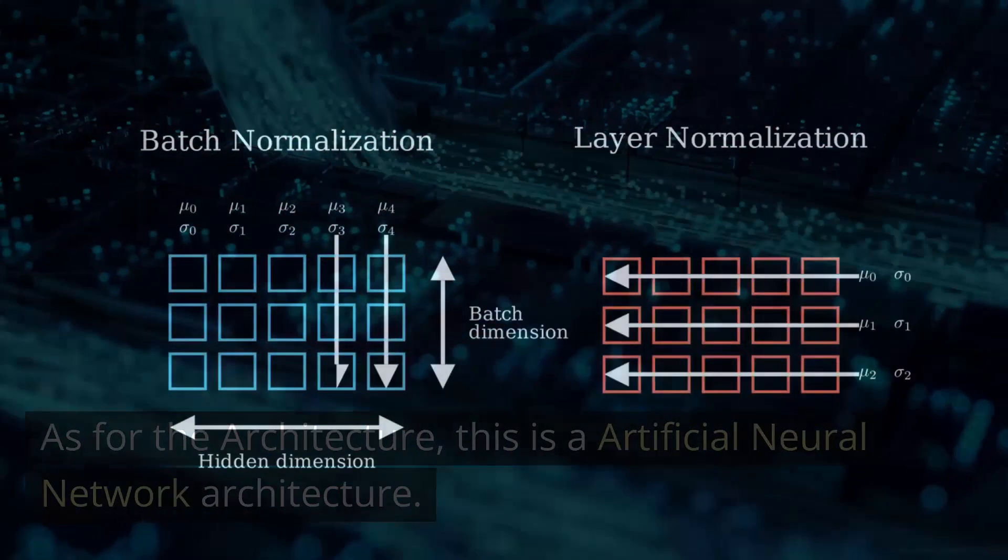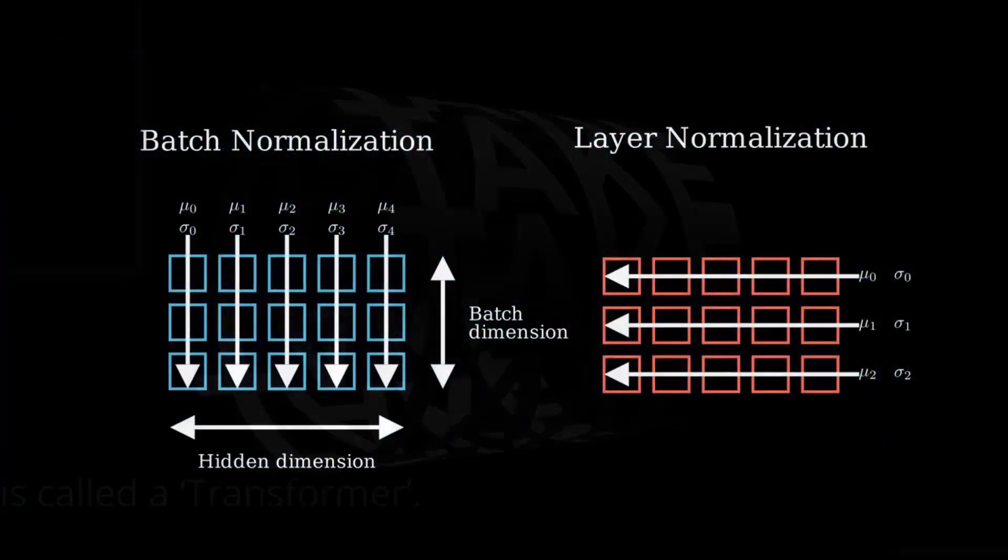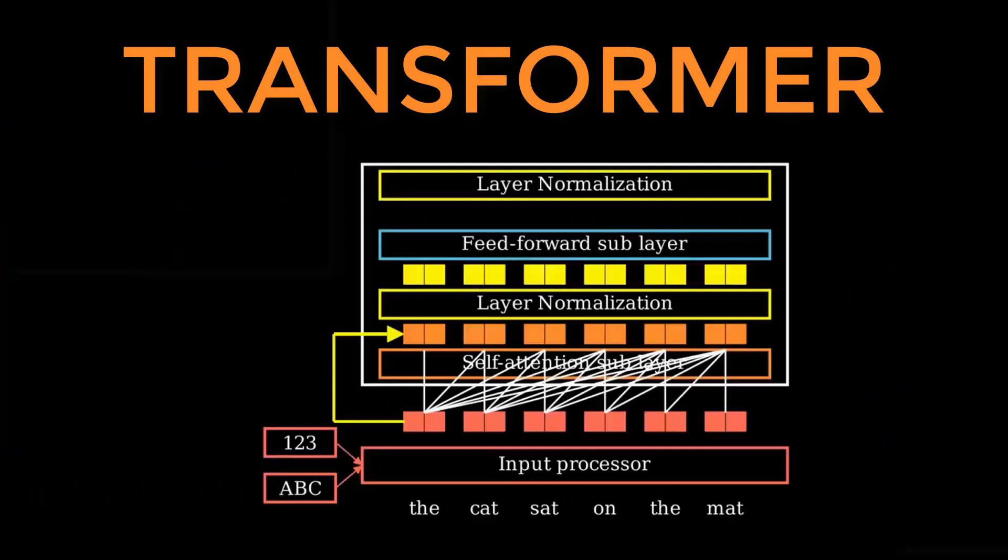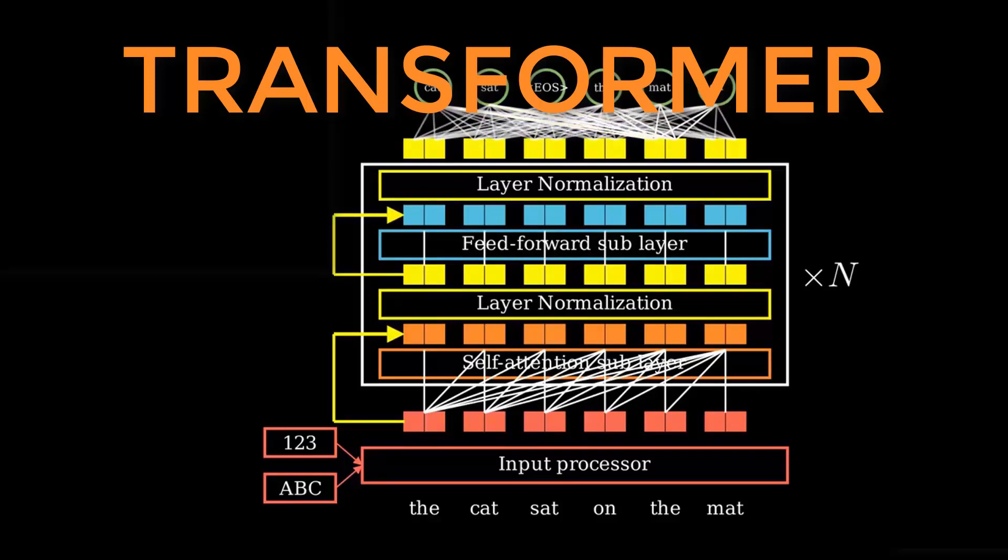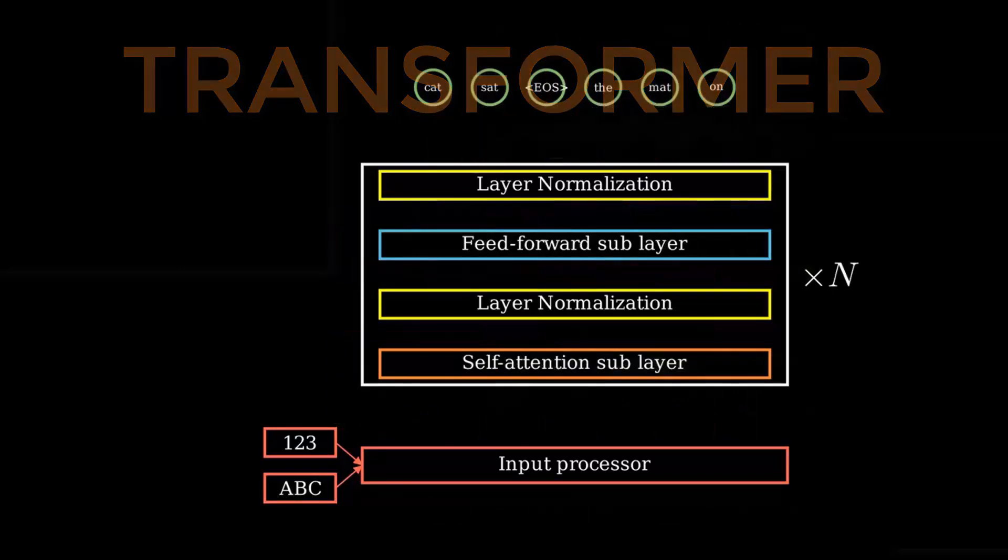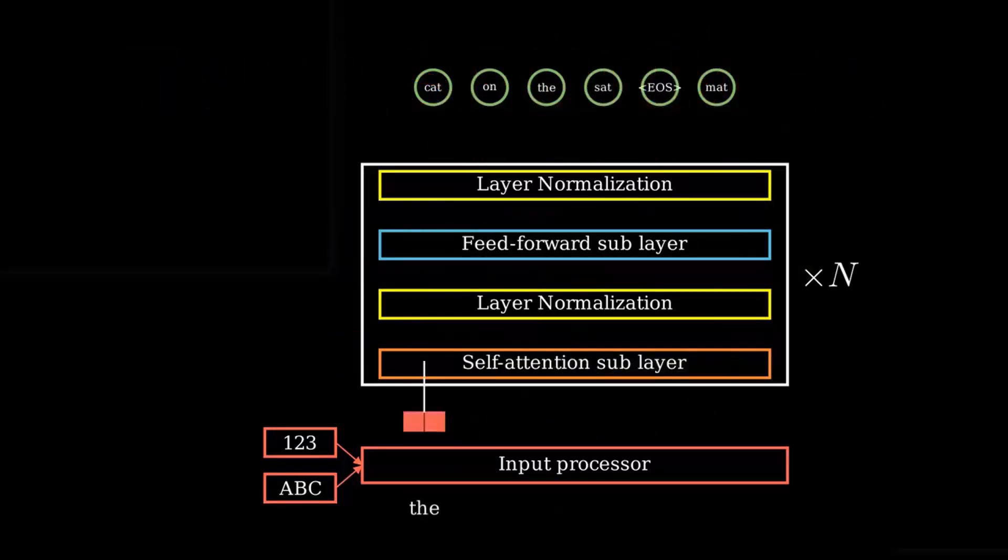As for the architecture, this is an artificial neural network architecture. And for text, this is called a transformer. For example, GPT, which stands for Generative Pre-trained Transformer, is a large language model that can generate human-like text. The transformer architecture enables the model to handle sequences of data, like sentences or lines of code. So what exactly is GPT and transformer? Let's examine the basic architecture.